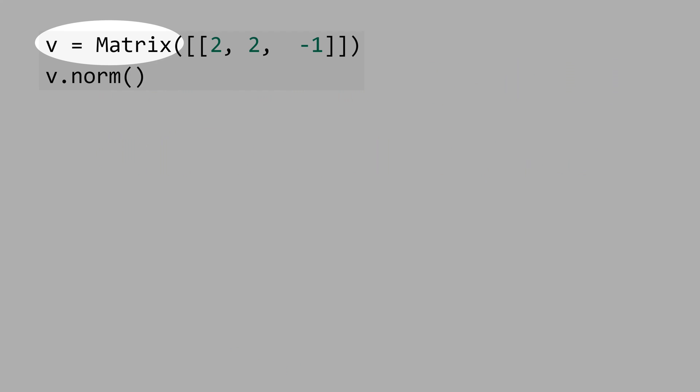Let's define the vector v with the components 2, 2, minus 1, and calculate the norm of v that is equal to 3.